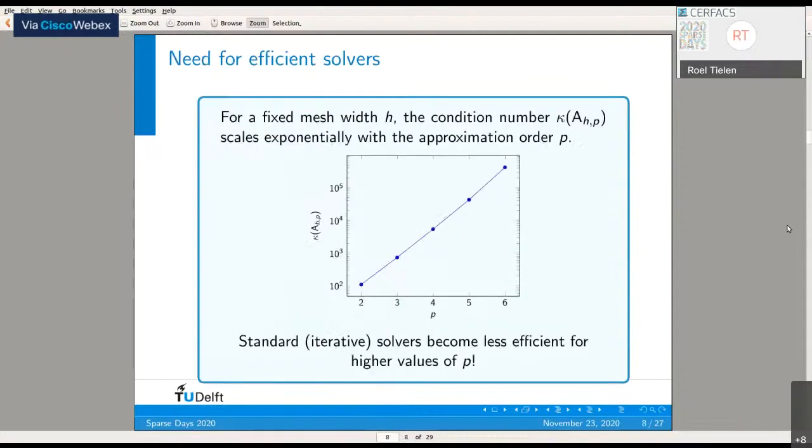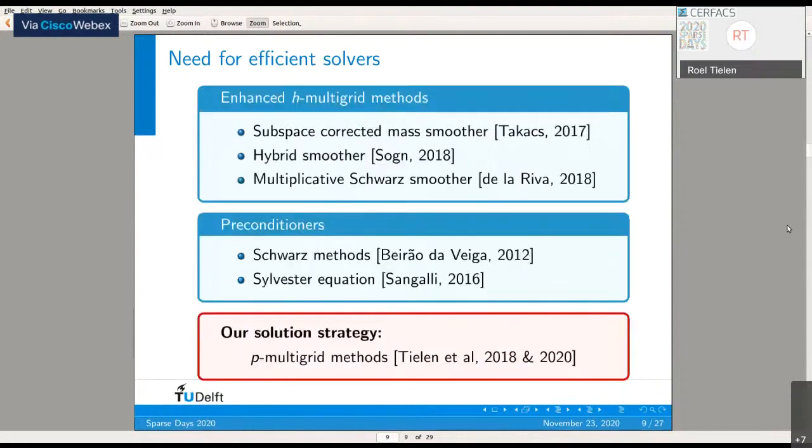If we plot the condition number of the stiffness matrix for a fixed mesh width and different values of P, we see that the condition number scales exponentially with the approximation order. As a consequence, standard iterative solvers become less and less efficient if we consider higher values of P.